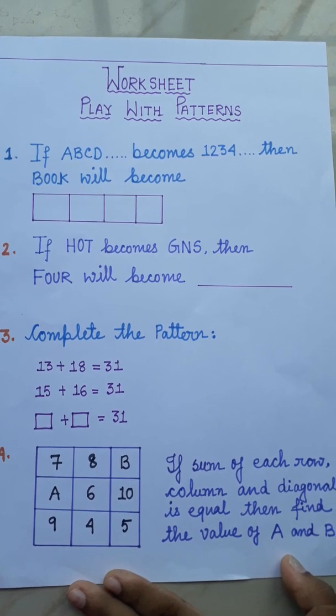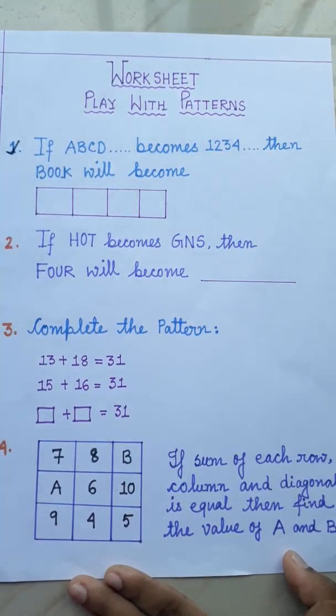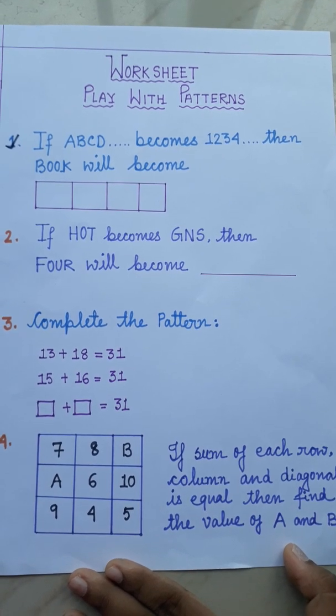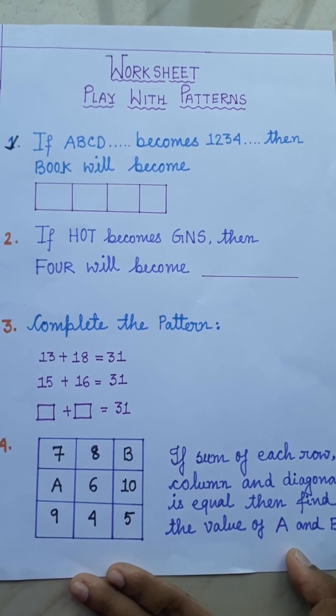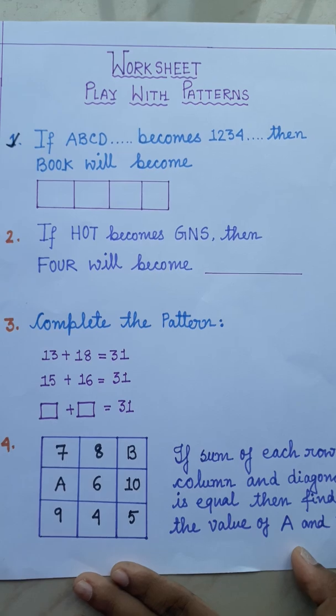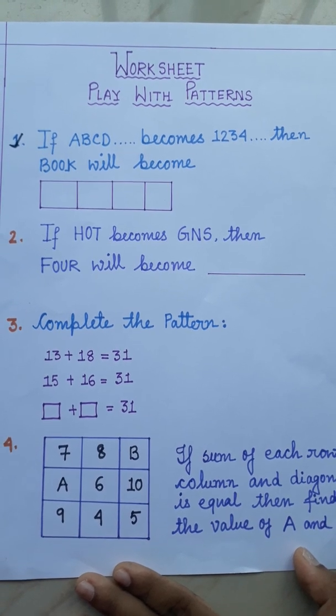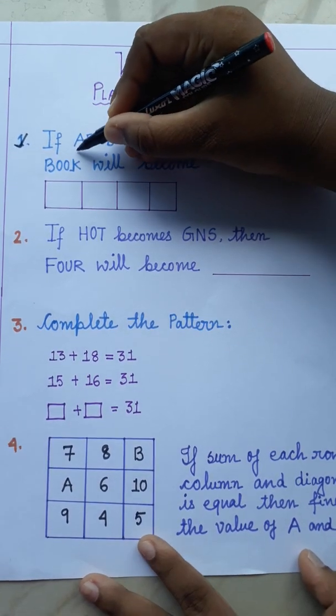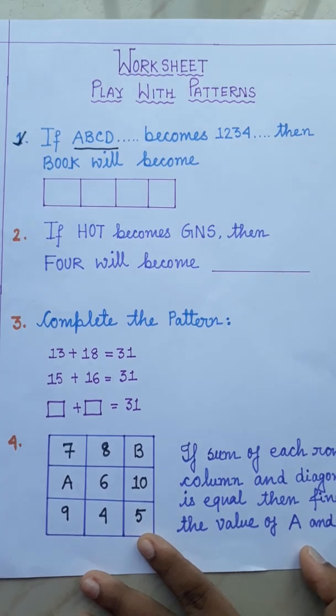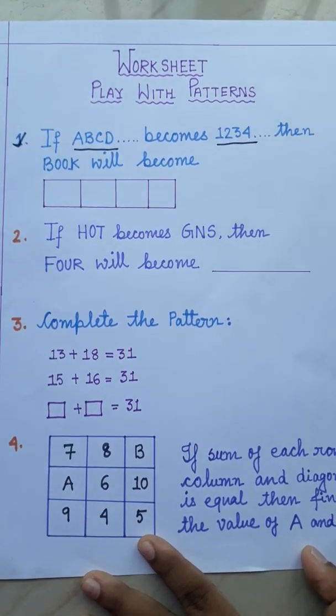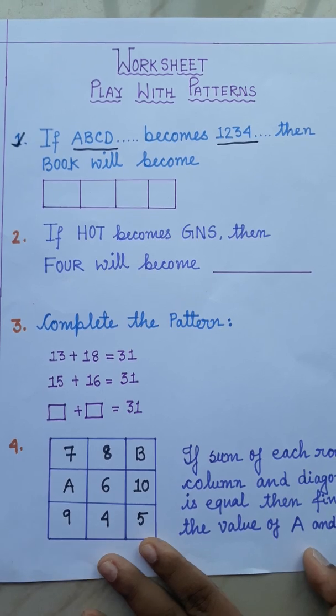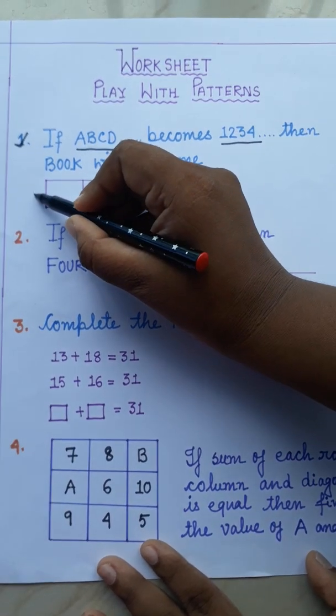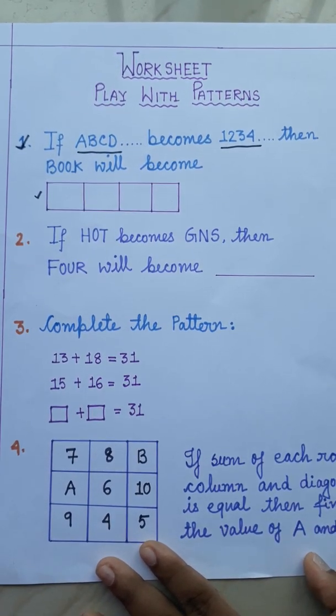Finally, we will see the first sum. Here in the first sum, what is given? If ABCD becomes 1234, then book will become what? You have to understand the pattern at first. Here it is written ABCD, it becomes 1234. Then book will become what? You will write your answer here. I hope you can do this sum.